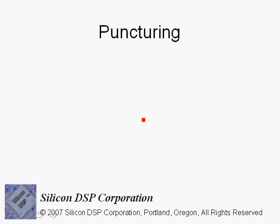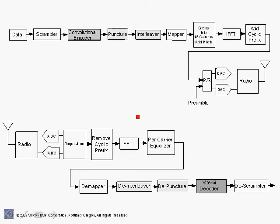In this section we will cover puncturing. Puncturing is used in conjunction with forward error correction. It's a block that follows the convolutional encoder, and at the receiver there's a depuncture block, and then the output of the depuncture goes to the Viterbi decoder.